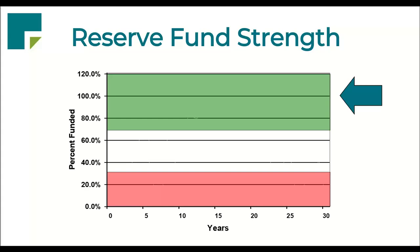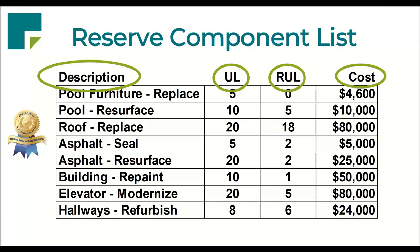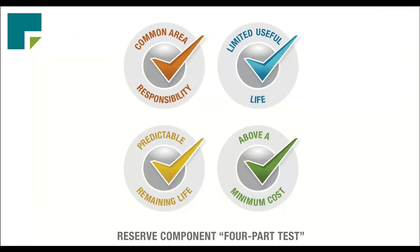Is there an established requirement for capital expenses greater than five-year life, over $5,000 in cost, or some other combination? It's based on National Reserve Study Standards. It has to be part of the common area. It has a limited useful life — that life could be as low as one year. It has to have a predictable remaining useful life so you can understand when the project might take place. And it has to be above a minimum threshold — typically understood to be in the range of half a percent to 1% of the total annual operating budget.